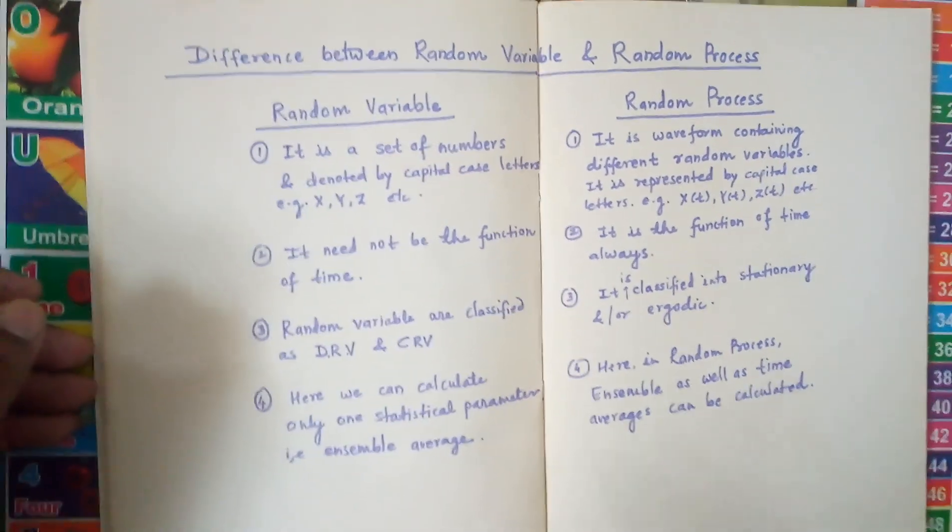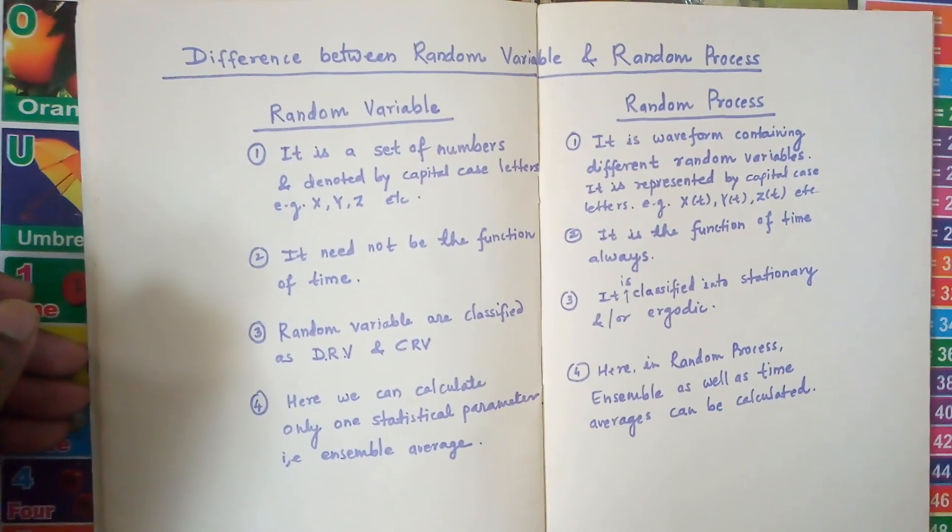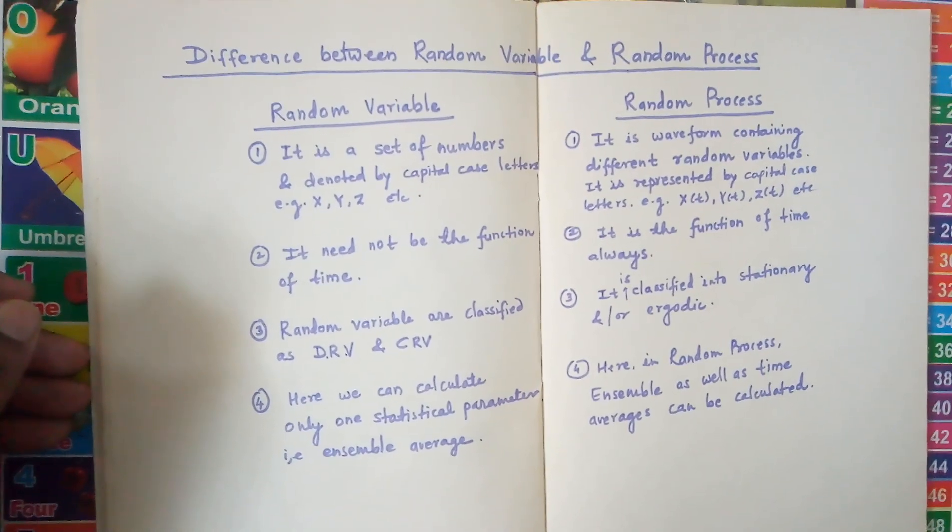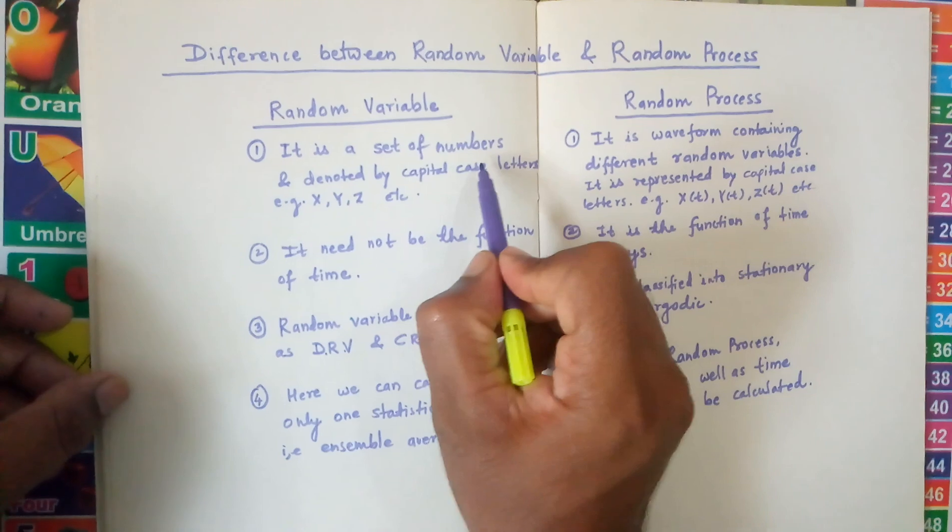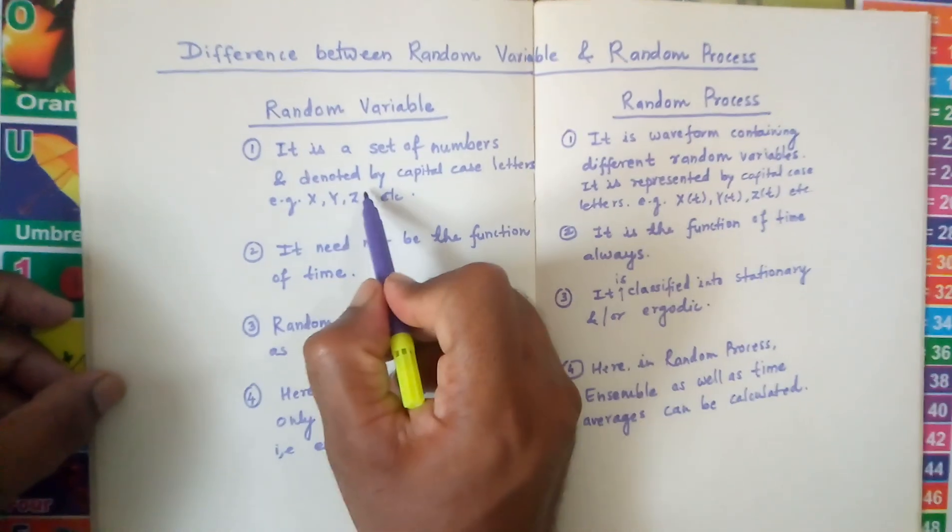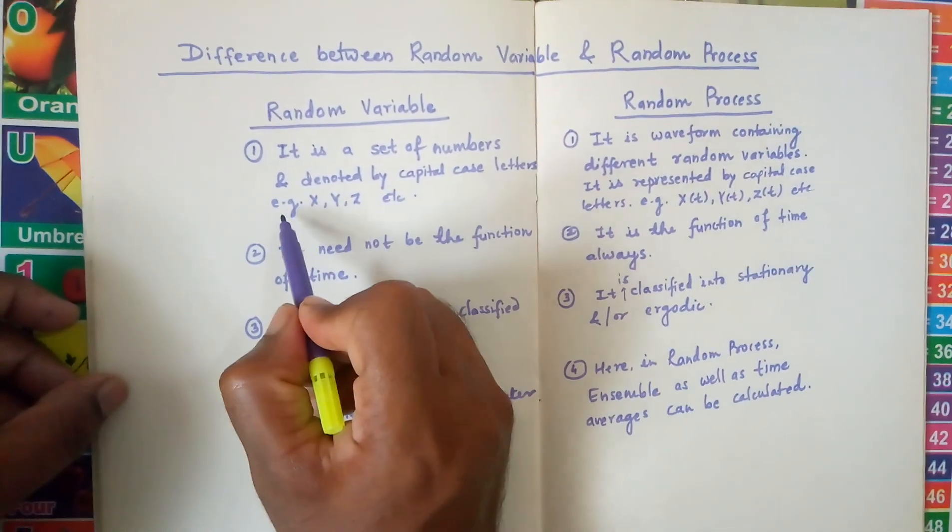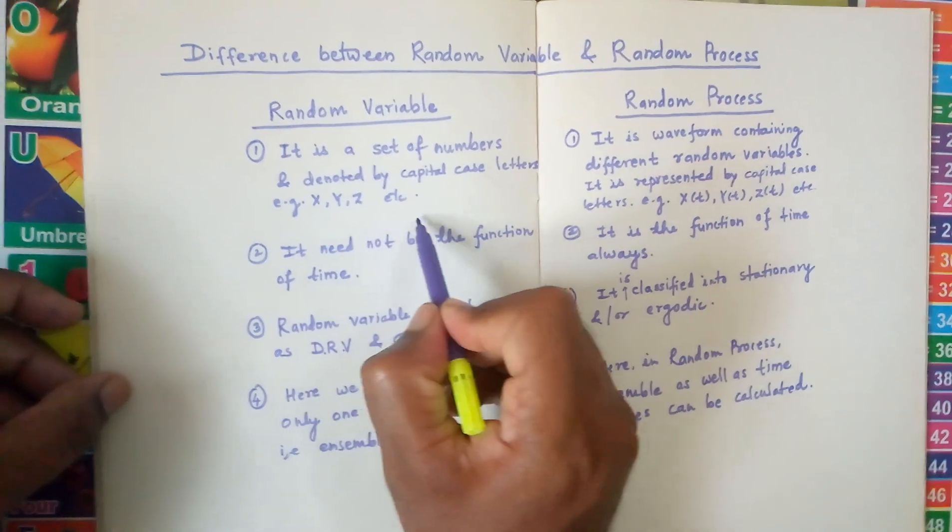In this video we will learn about the difference between the random variable and random process. Random variable is a set of numbers and is denoted by capital case letters only, that is capital X, Y, Z, etc.